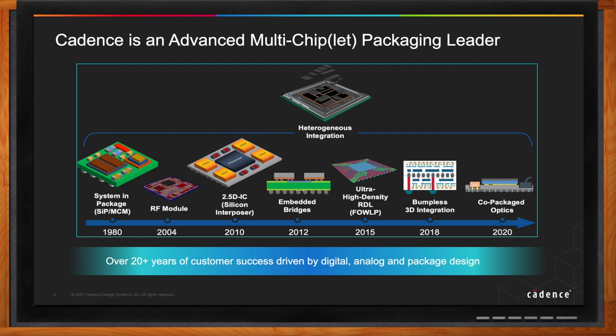What has recently changed in the last 10 years or so is the improvement and advancements that the foundries have brought in — silicon interposers and RDL interposers that connect multiple chiplets together, not just at the packaging level, but pieces of silicon that can be stacked on top of each other. Things like ultra-high-density RDLs or bumpless 3D integration is now what foundries are talking about.